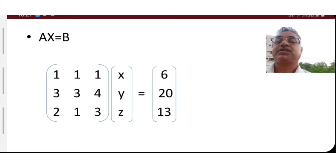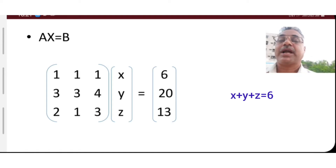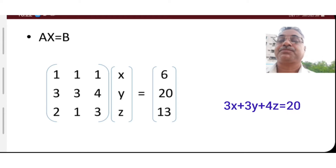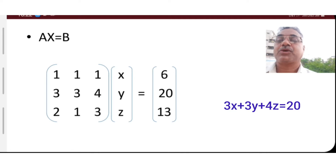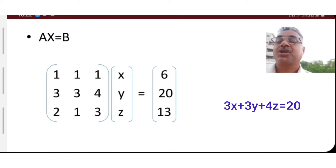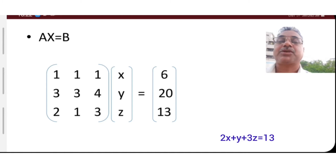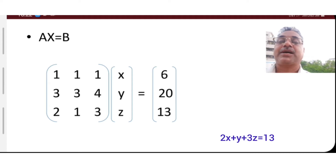From the first equation, we take x-coefficient 1, y-coefficient 1, and z-coefficient 1 as the first row, and 6 as the right-hand side element. From the second equation, x-coefficient 3, y-coefficient 3, z-coefficient 4, and 20 as the right-hand side. From the third equation, x-coefficient 2, y-coefficient 1, z-coefficient 3 as the third row, and 13 as the third element in matrix b.